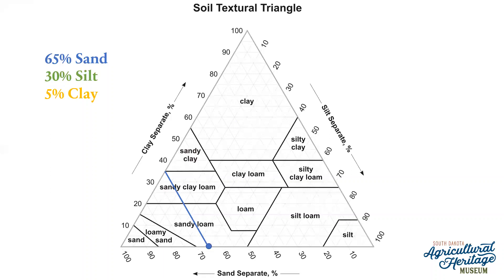Working clockwise, I'm going to do clay next. On the left-hand side it says 'clay separate' and the arrow moves from bottom to top. Since I have 5% clay, I'll place a yellow dot at the 5% line. The arrow on the left-hand side will tell you which direction to draw your clay line into the triangle. Since that arrow is pointing up, we use the line that goes straight across, and you can now see an intersection between my blue sand line and my yellow clay line.